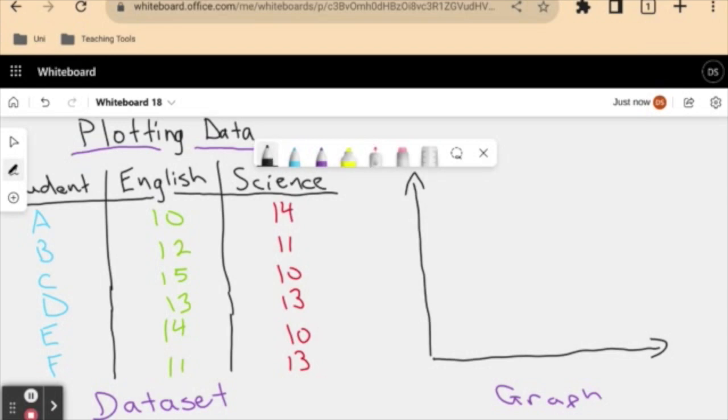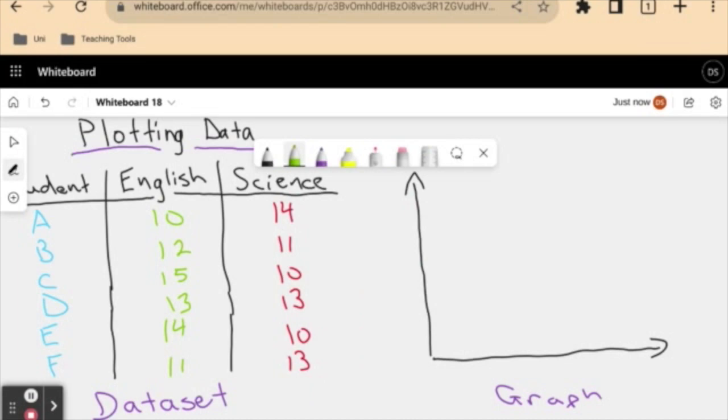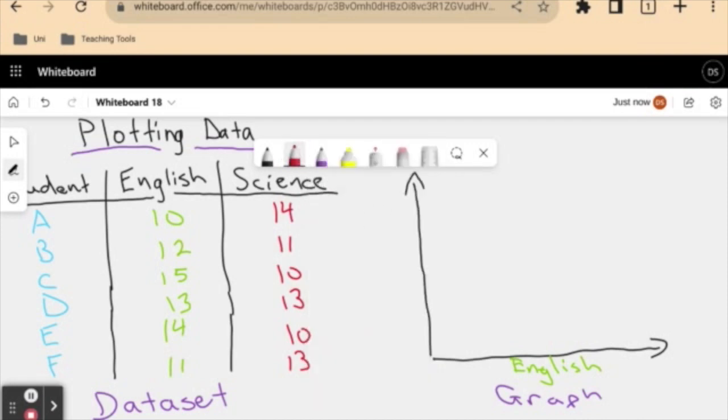So all we're drawing here is a type of map and we want to show student results from English. I'll actually change the color, let me color coordinate this just to really help with the visual aspect. So on this little line, we call these two lines axes, but we have my English here and up here we're going to have my science.